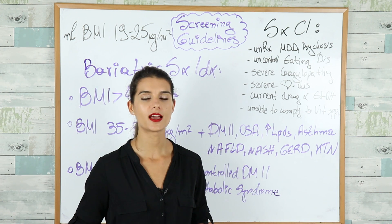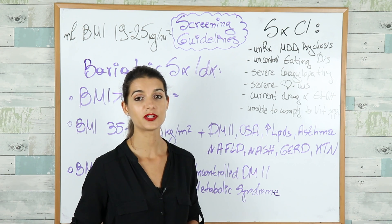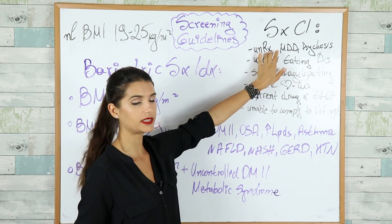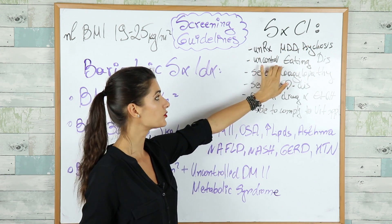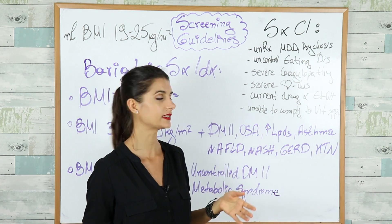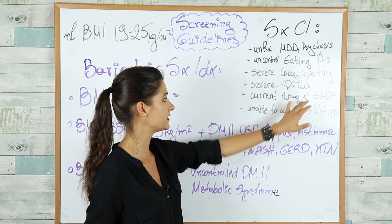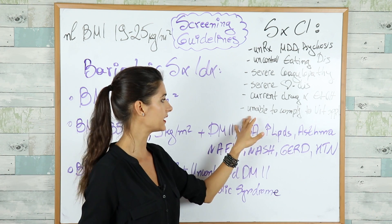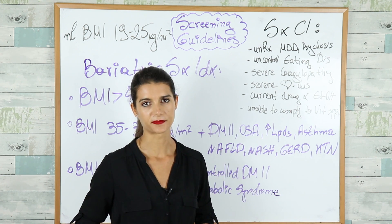On the step exams they love asking about contraindications, so let's go over the bariatric surgery contraindications. These include untreated major depressive disorder, psychosis, uncontrolled eating disorders like bulimia and anorexia, severe coagulopathy, severe cardiac disease, current drug and alcohol abuse, or inability to comply with lifelong vitamin supplementation.